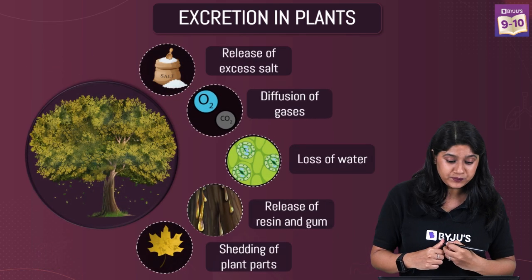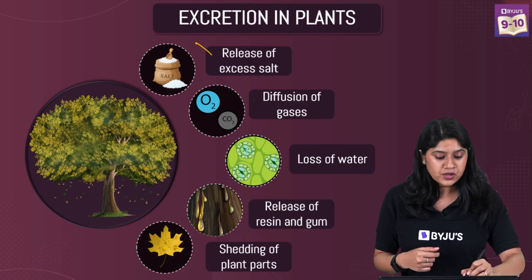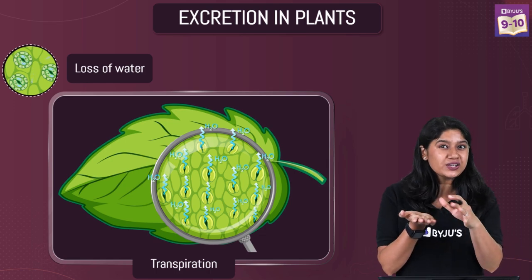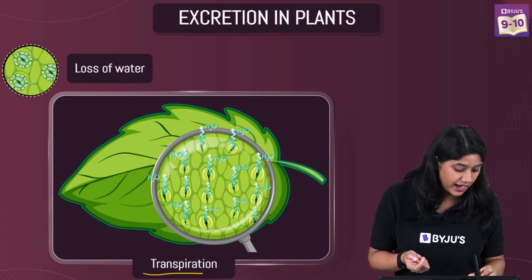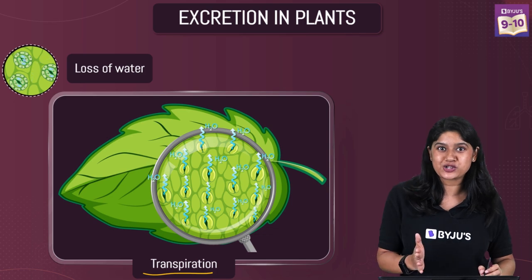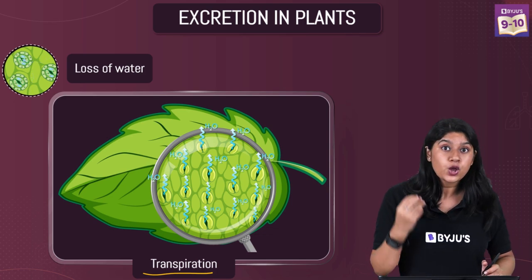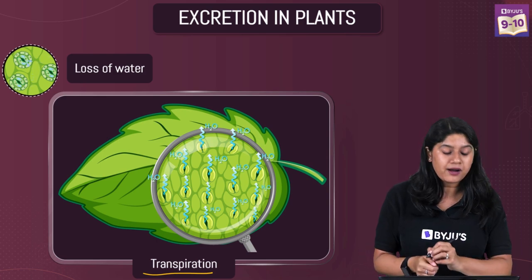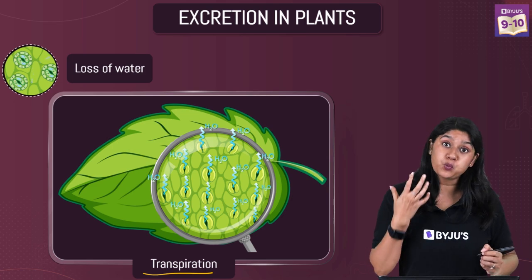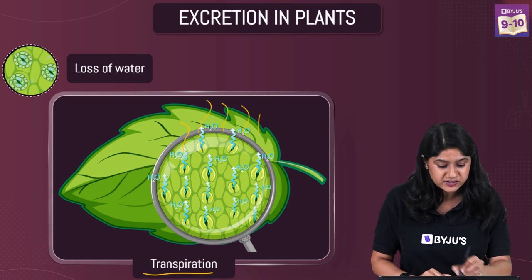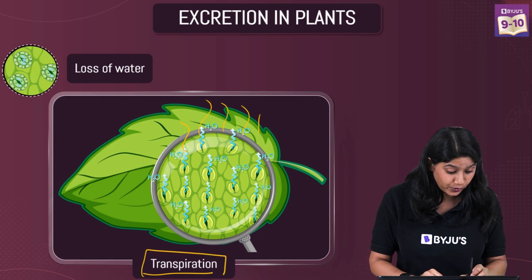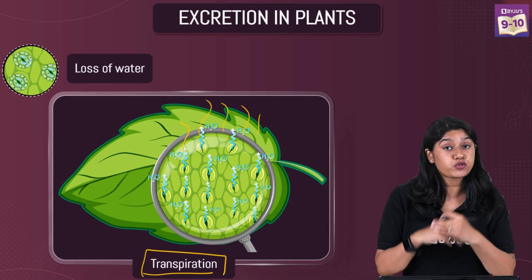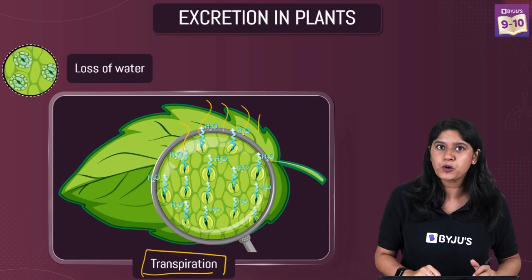Moving ahead to the next mode: we have release of excess salt, diffusion of gases, and now loss of water. From the surface of the leaf we see the loss of water, and this process is called transpiration. Transpiration is the process where water is lost in the form of water vapor from the aerial parts of a plant. Transpiration also plays a very important role in pulling water up from the roots to the top part of the plant.